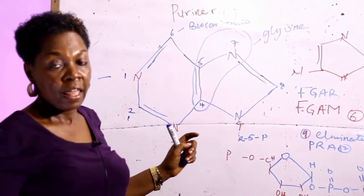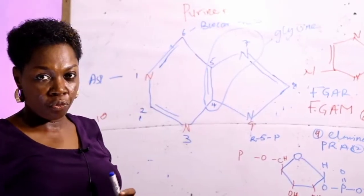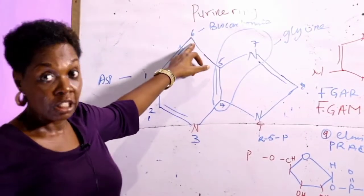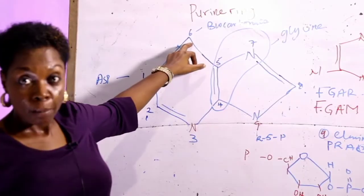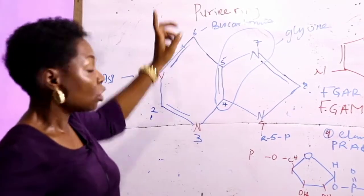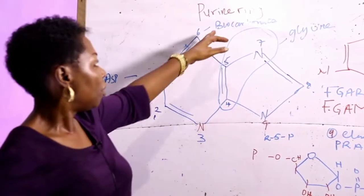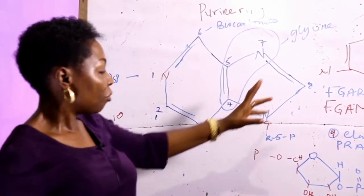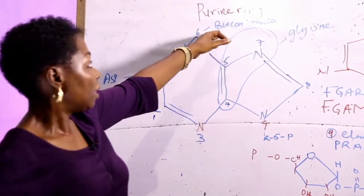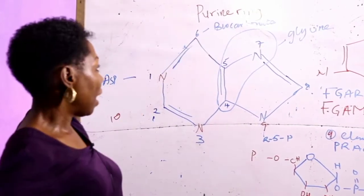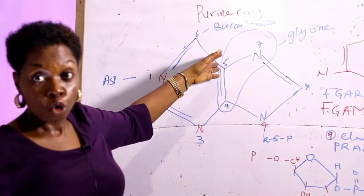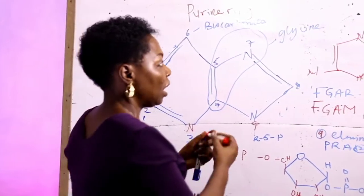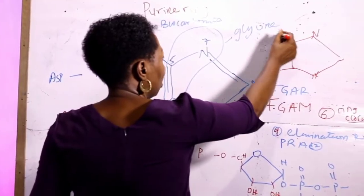After the ring closure, the next reaction is a carboxylation reaction which furnishes the growing ring at position 6. The source of this carboxylation is bicarbonate. So after the ring closure, you have bicarbonate furnishing the growing ring at position 6, giving us a growing ring structure.